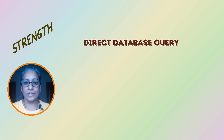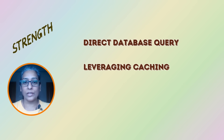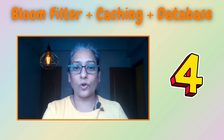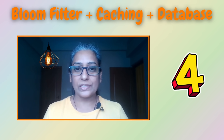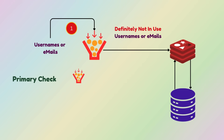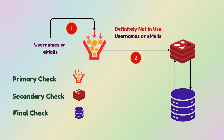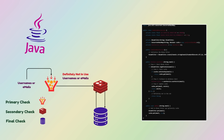Each method has its strengths. Direct database queries are precise but can be slow. Caching is fast but requires careful management. Bloom filters are lightning quick with minimal memory footprint, though they might not always be 100% accurate. For a robust, scalable solution, you can combine all three approaches: first, use a Bloom filter to quickly eliminate usernames or emails that are definitely not in use; second, for entries that pass the Bloom filter, check the cache; and finally, if the data is not in the cache, query the database and update the cache with the result to optimize future queries. Here is an example of combining all three strategies in Java.